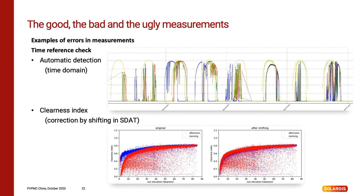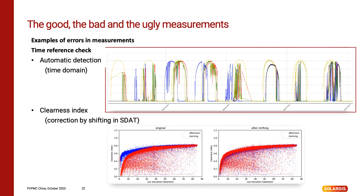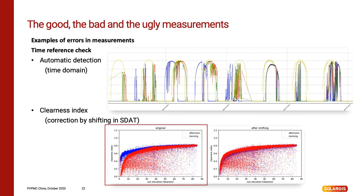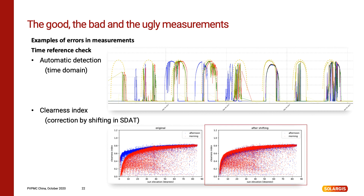These pictures illustrate the results of the so-called time reference check. This error was automatically detected and the upper picture shows a shift of values of the blue chart by several hours. Values are misaligned and need to be moved to the correct time location. The bottom picture shows a similar situation where we have used a clearness index. Morning red values are not aligned with afternoon blue values due to time shifts. This defect was repaired by the SDAT shifting tool.